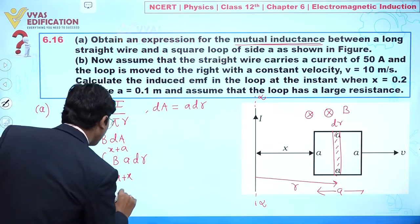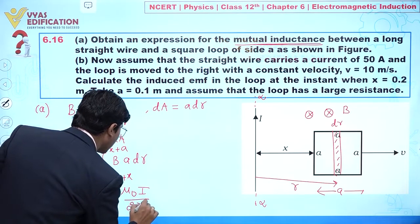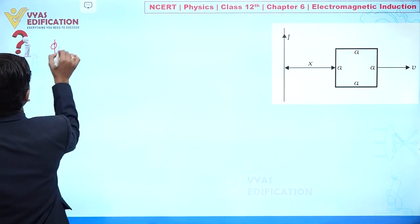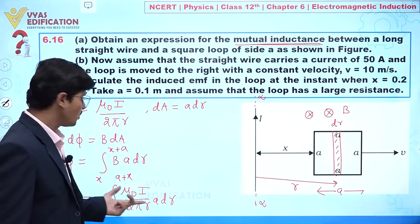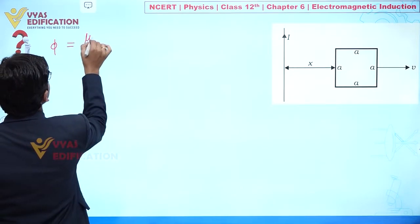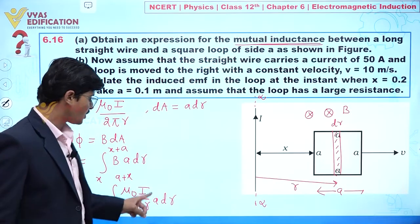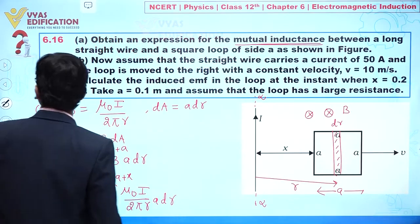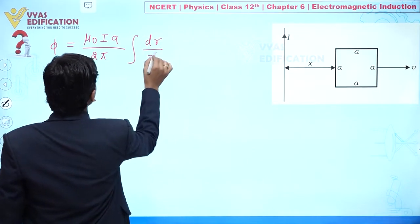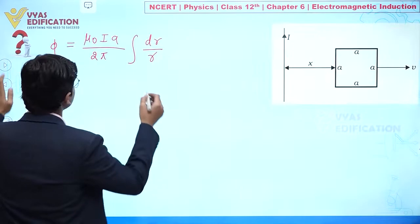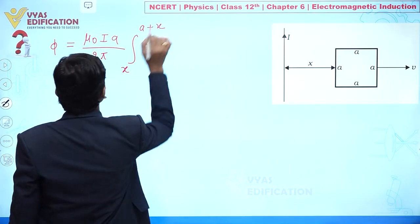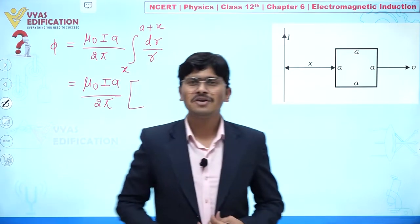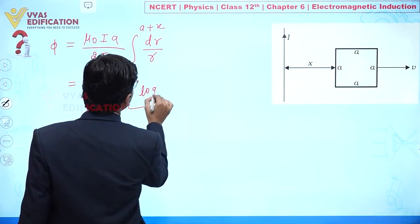Substituting B = μ₀I / (2πr), the flux integral becomes φ = (μ₀Ia / 2π) · ∫ dr/r from x to (x + a). The integration of dr/r equals ln(r), evaluated from x to (x + a).